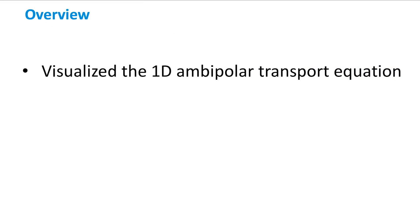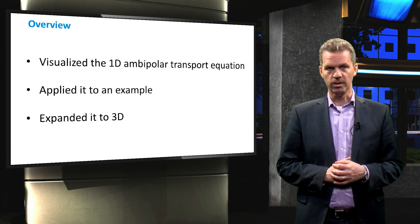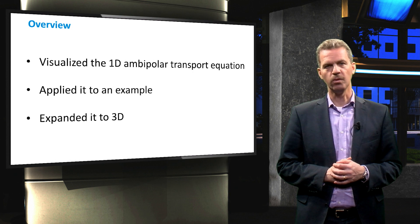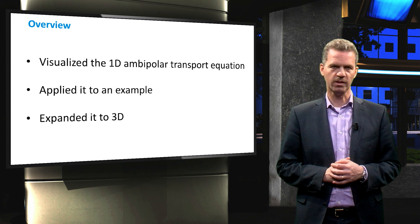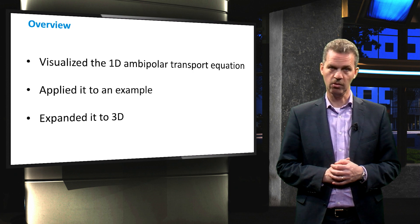Now to summarize, we have visualized the one-dimensional ambipolar transport equation, applied it to an example of an n-type material and finally expanded the equation to three dimensions. With this equation at our disposal, we can take on many semiconductor physics problems and design better solar cells.